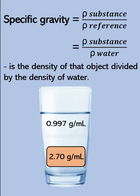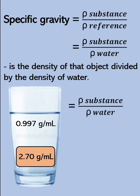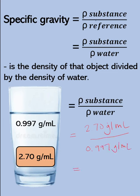Let's solve the specific gravity of the object. That is the density of the object — 2.70 grams per ml — over the density of our reference, water, which is 0.997 grams per ml. If you divide this: 2.70 divided by 0.997, we get 2.71. So that is the specific gravity for this object.